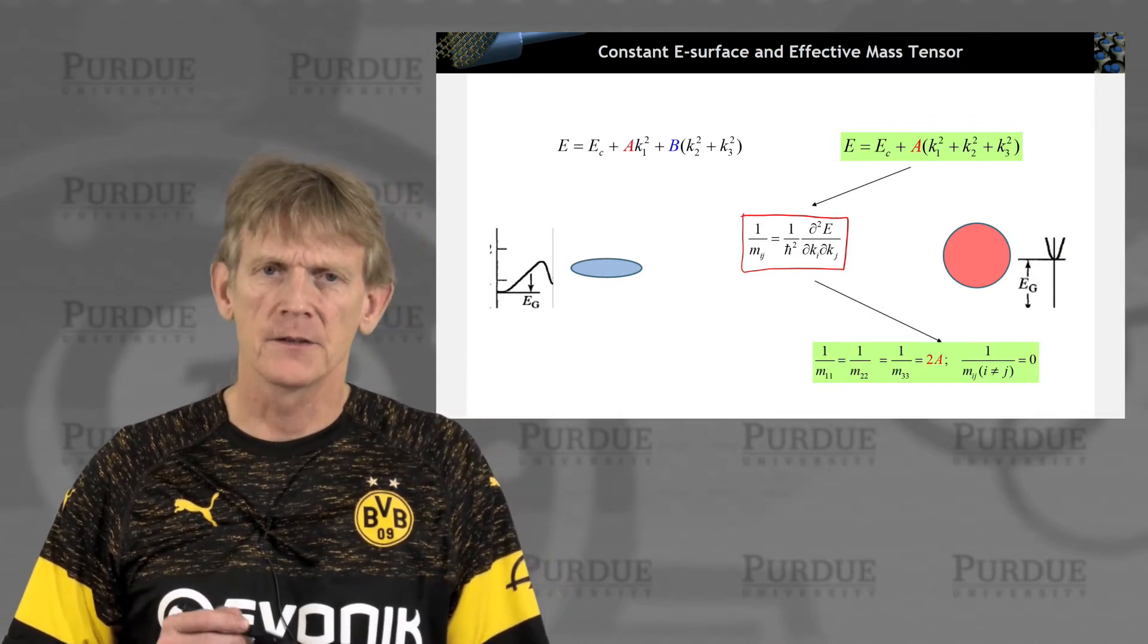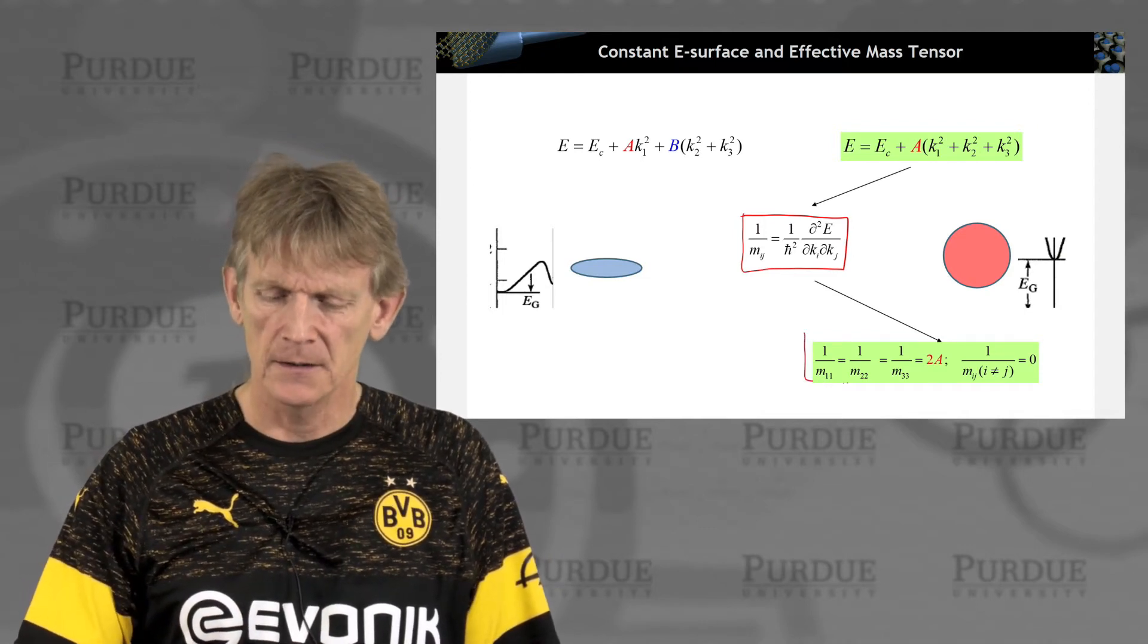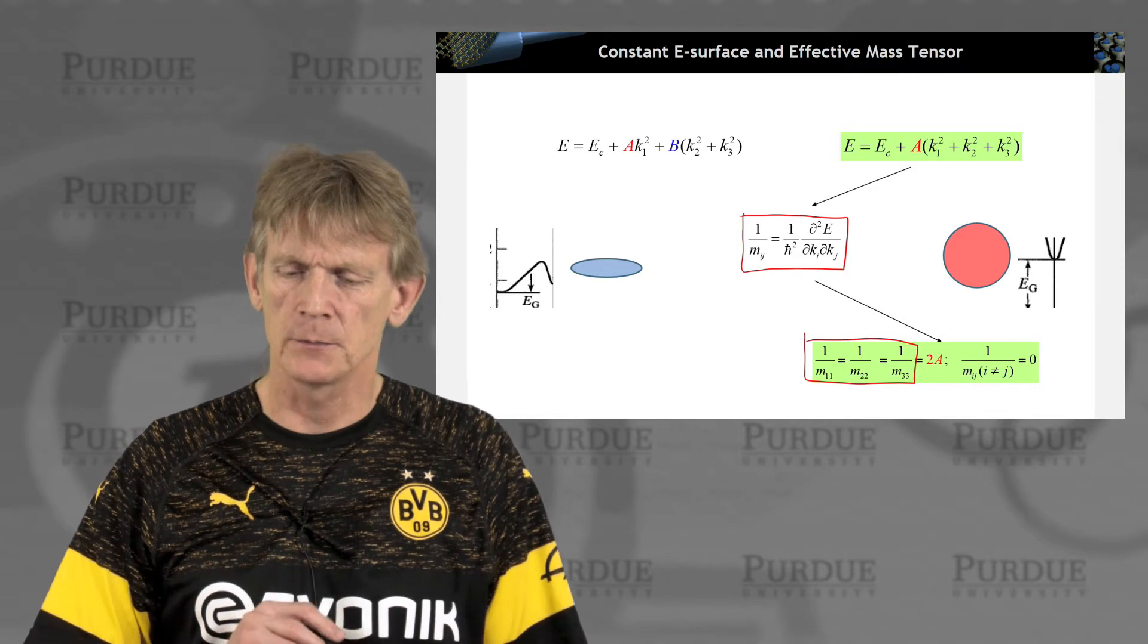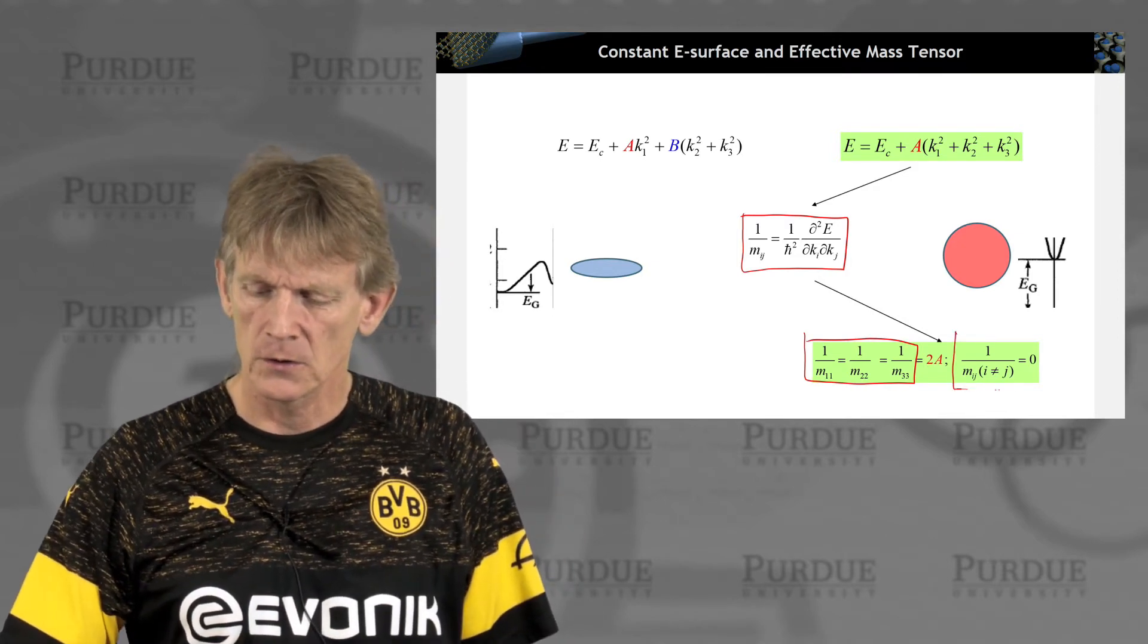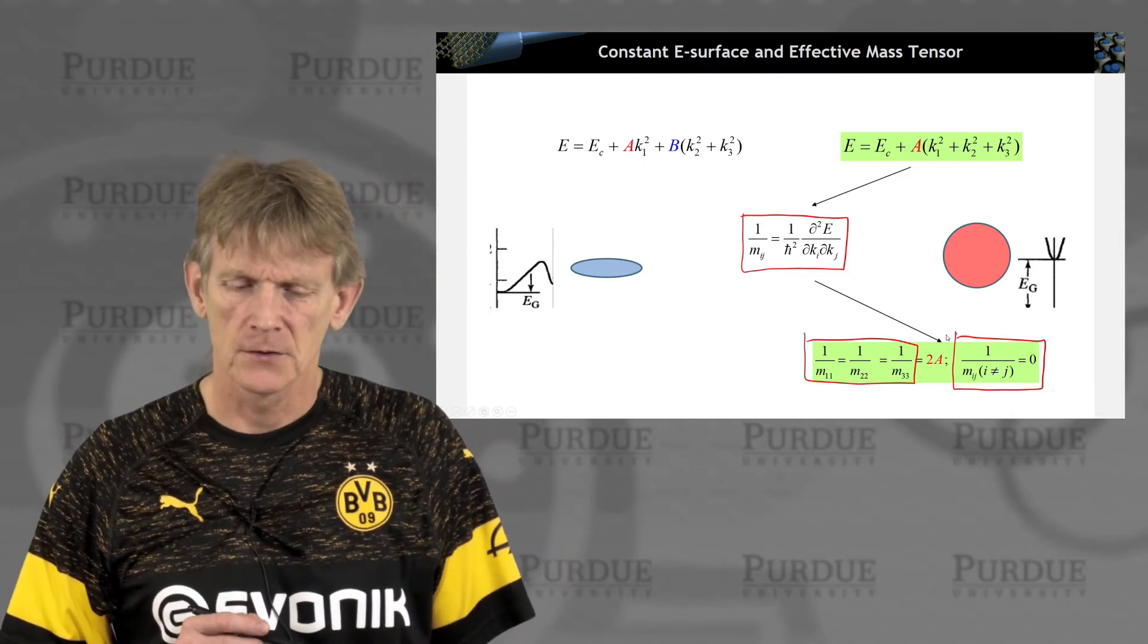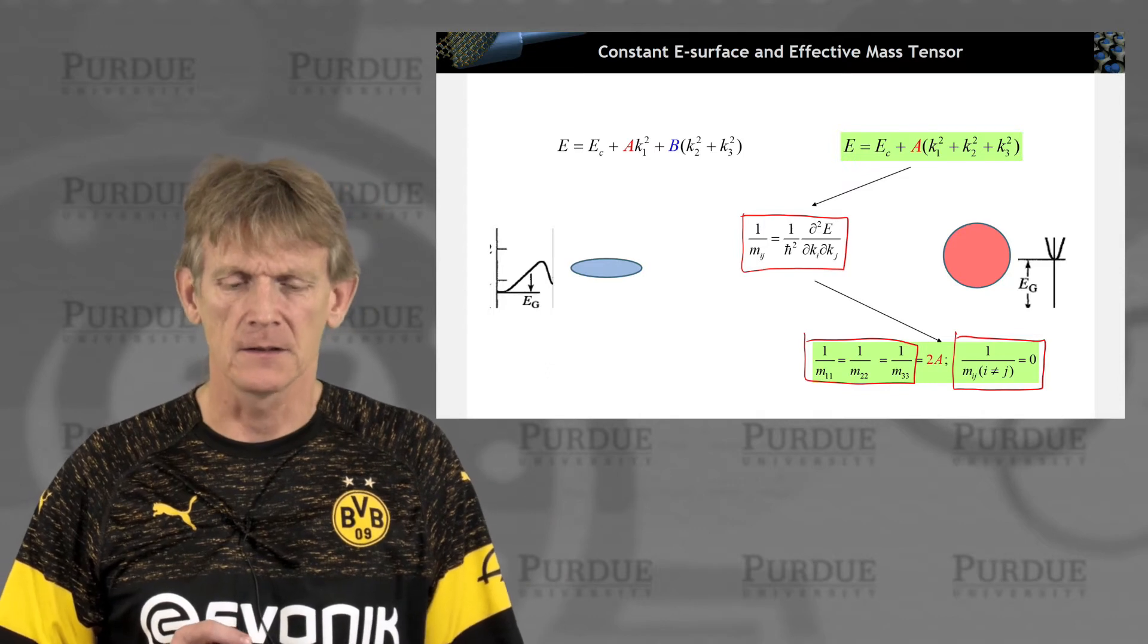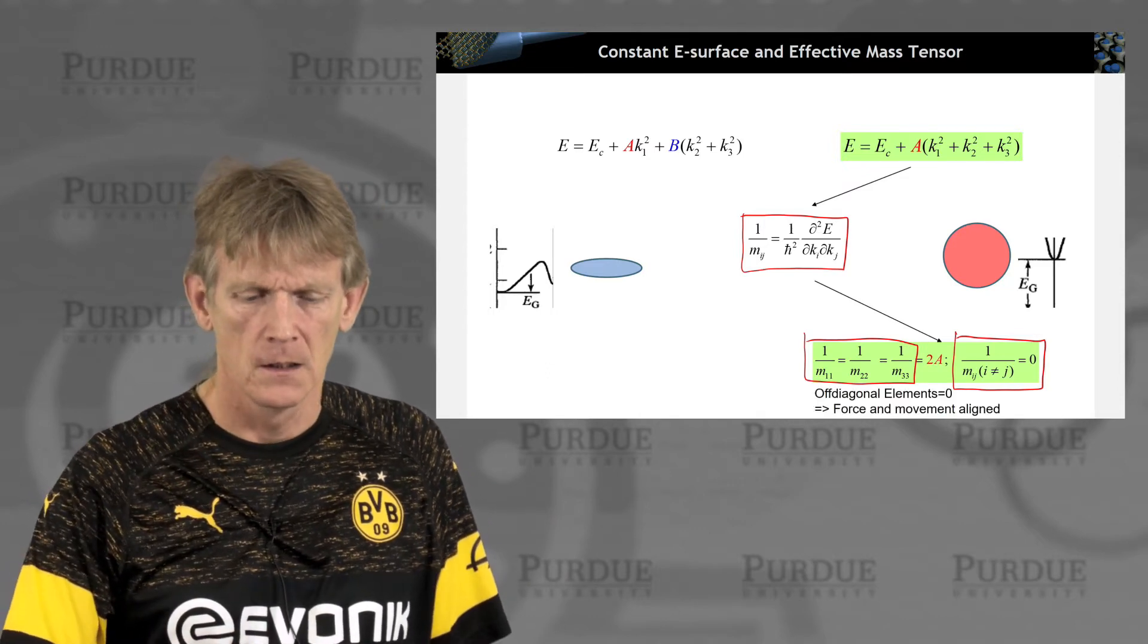And for a spherical object like this, this is very simple. There's three identical masses in the three principal directions, and there's no cross terms. So it's a diagonal tensor, and the diagonals have exactly the same value.